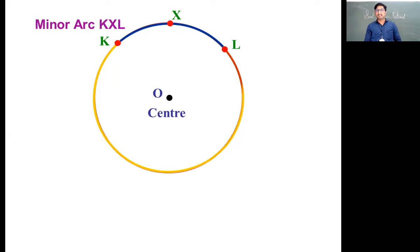If you place K to L and place one point on this side of circle, it shows the major part of the arc, the major part of circle - that is major arc, named as KYL.